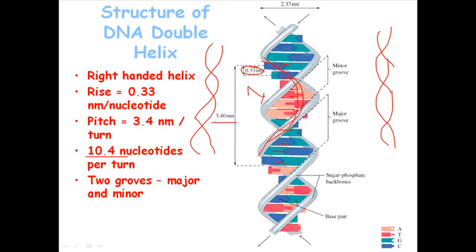The actual structure of DNA forms a major groove and a minor groove on the opposite side. The strands are arranged so that in some places a major groove forms, which is much wider, deeper, and covers more area. On the opposite side is a shallower, narrower region called the minor groove.